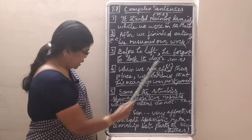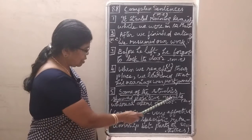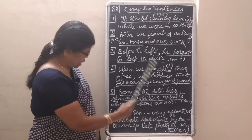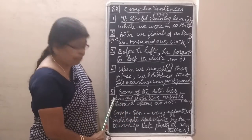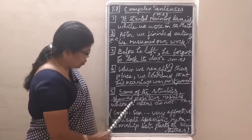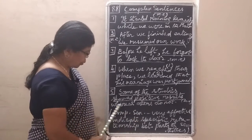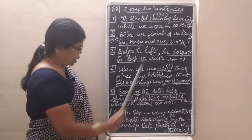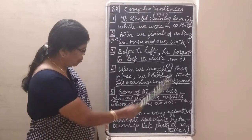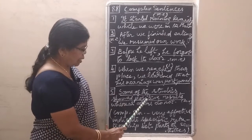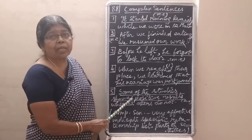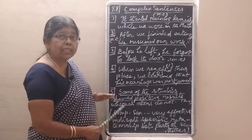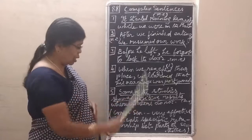Some of the studies showed positive results, whereas others do not. 'Whereas' means 'while.' 'Some of the studies showed positive results' is the main clause, and comparatively, 'whereas others do not' means other studies do not show positive results.